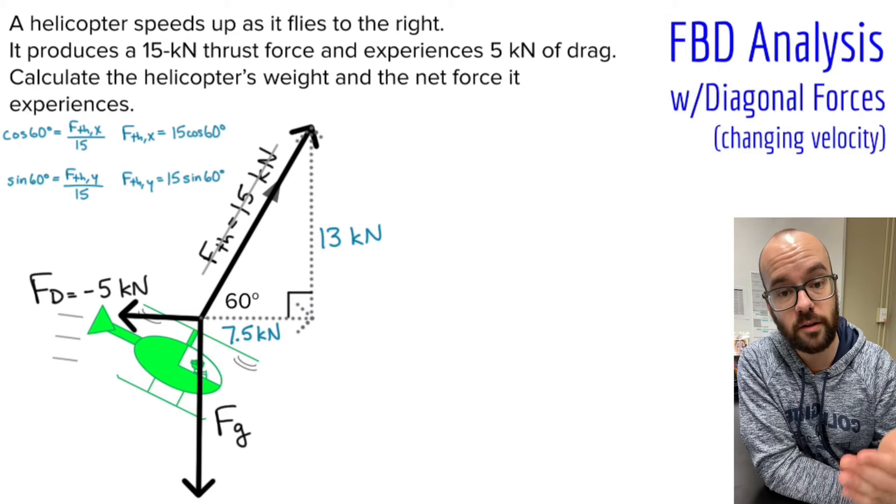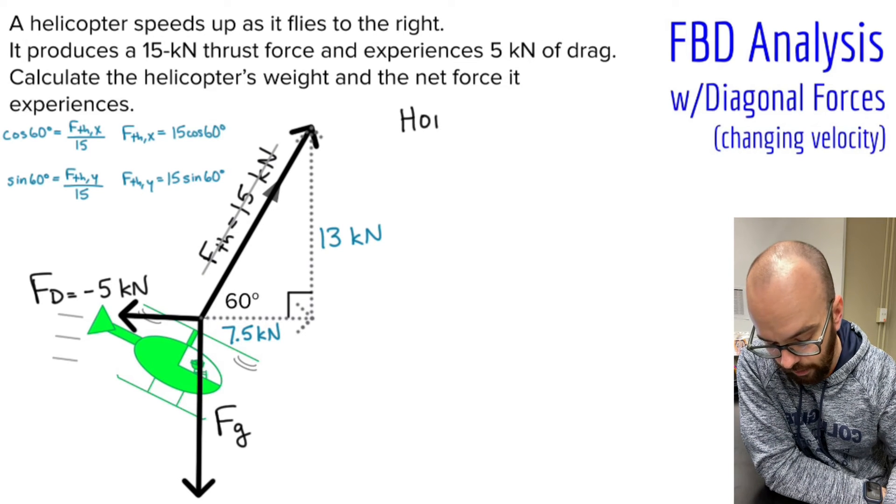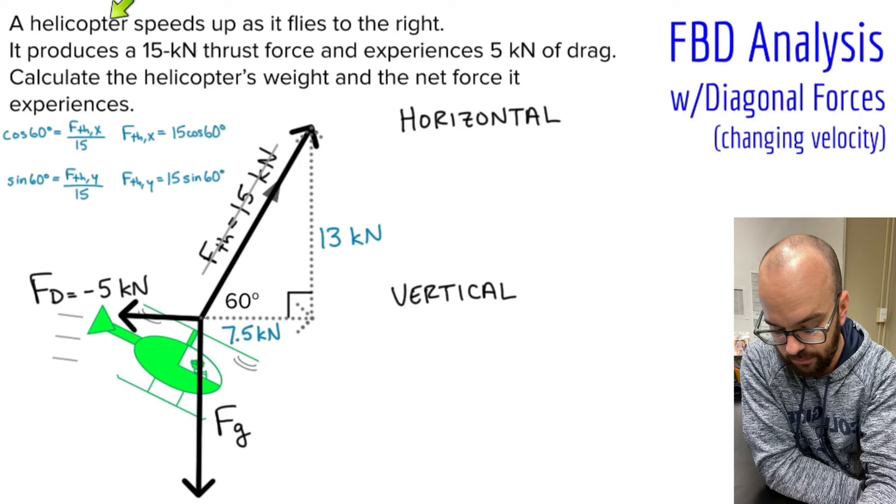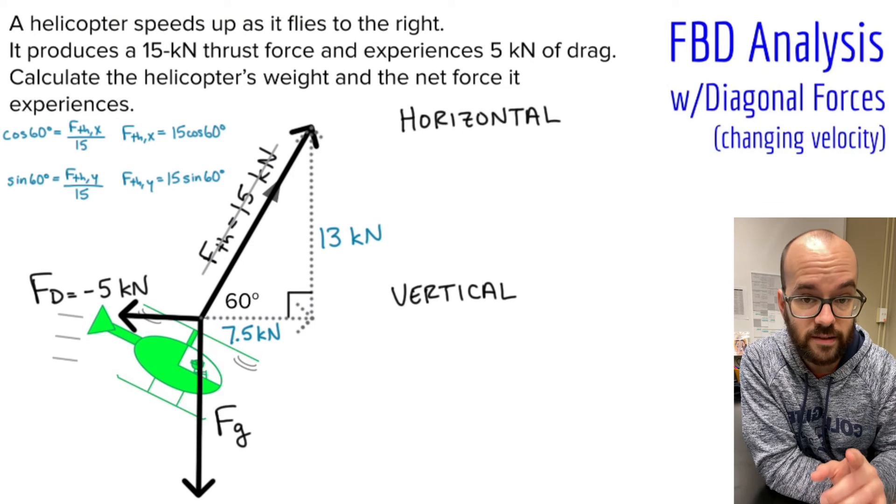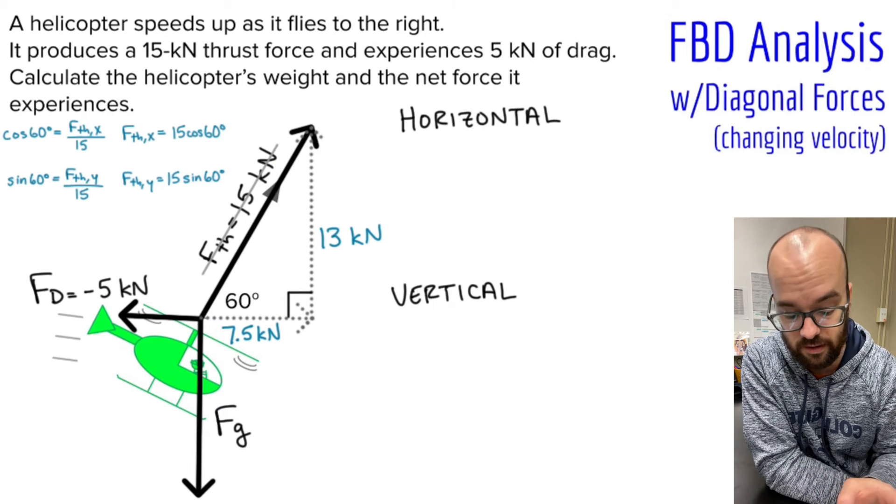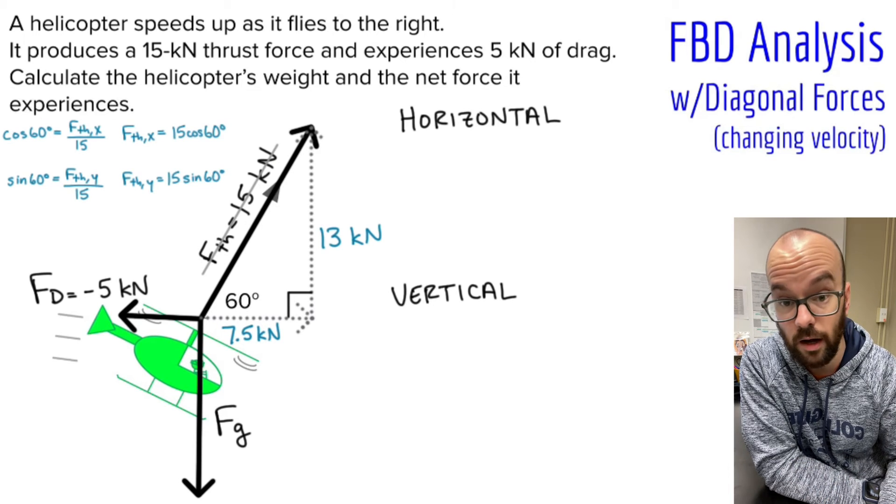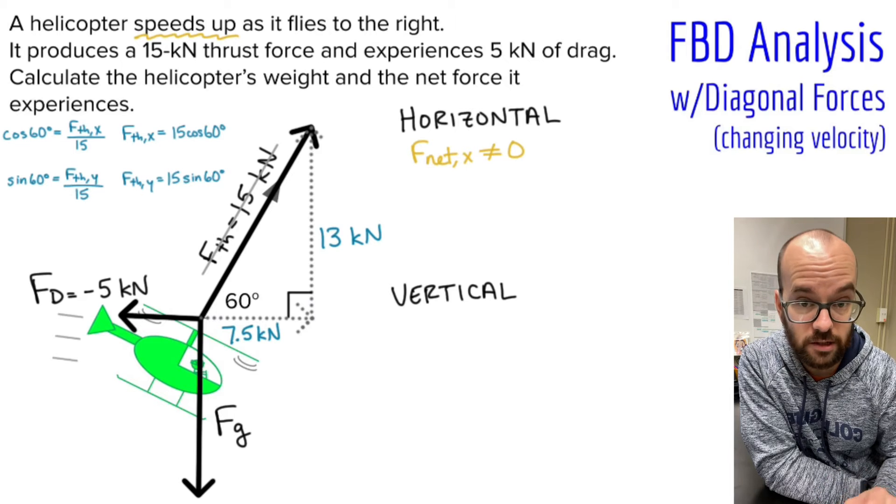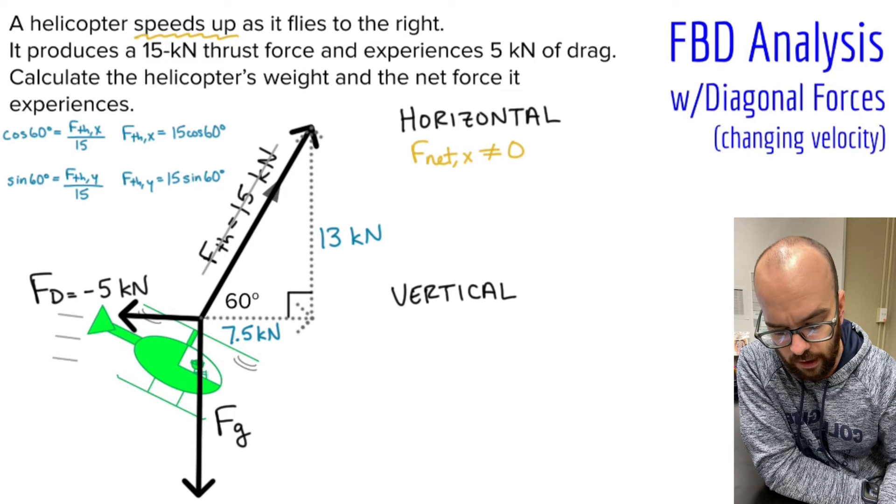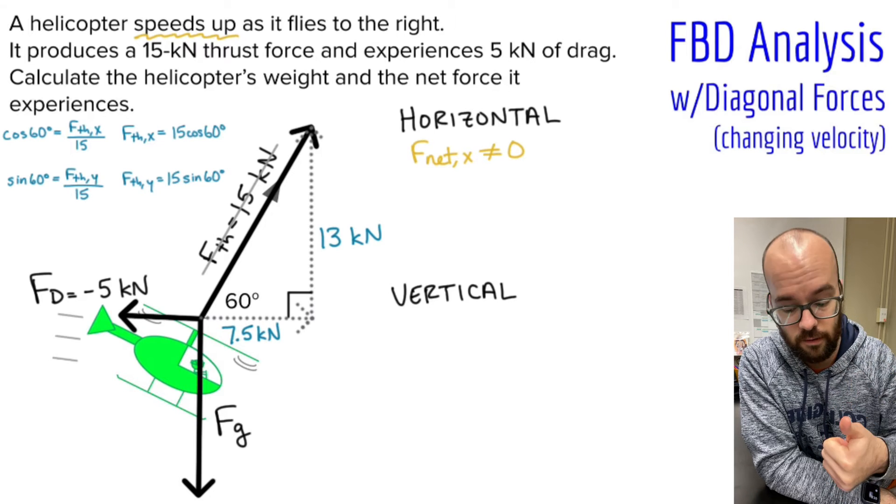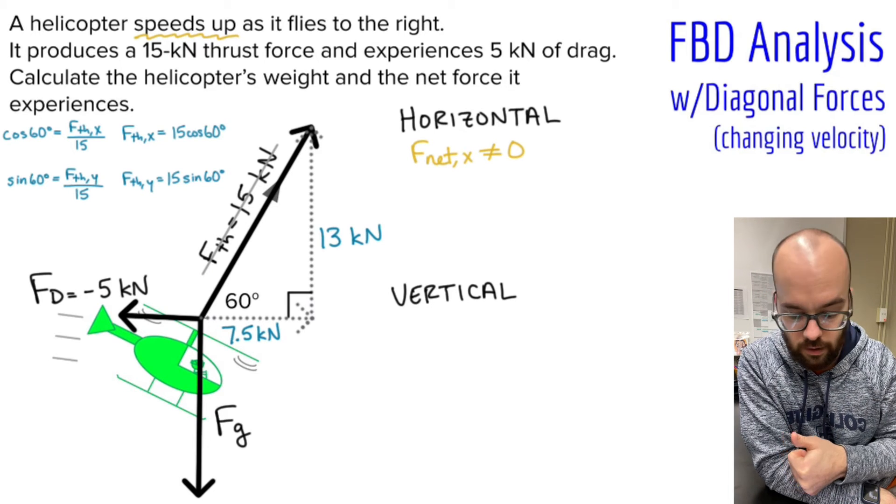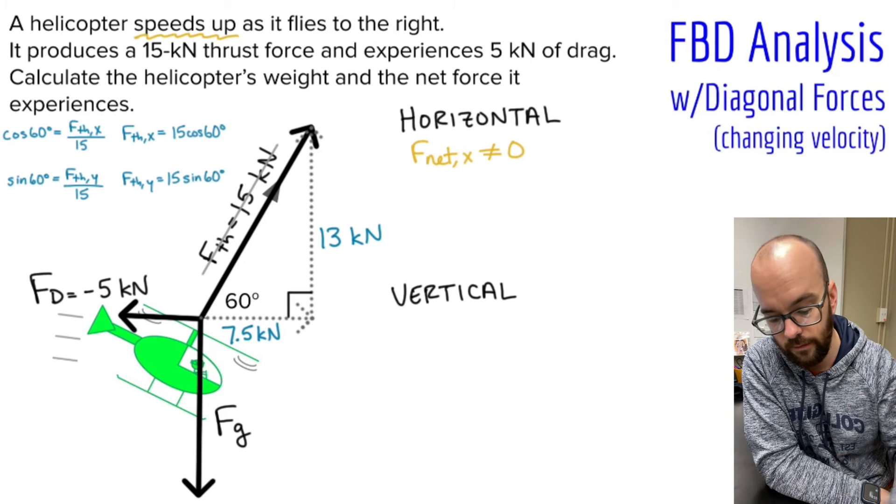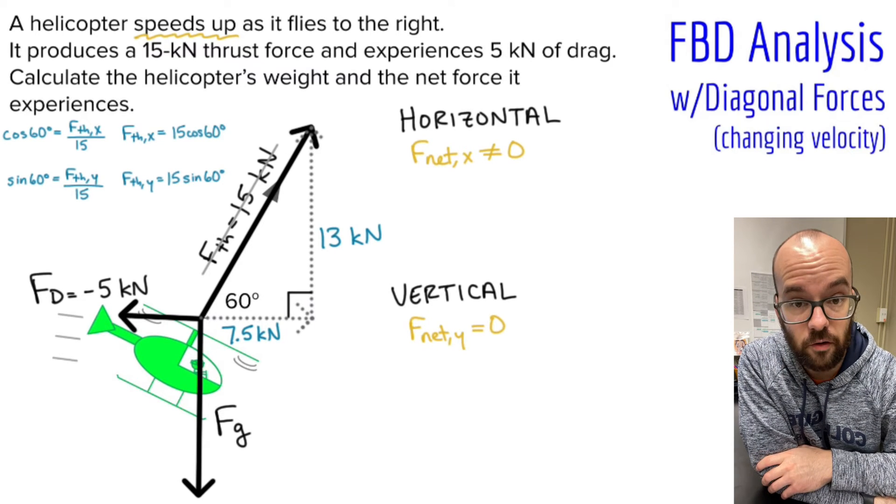Now we want to think about this horizontally and vertically separate from each other. I'm going to label my diagram horizontal and vertical and do the analysis separately. Thinking horizontally, I see that it speeds up as it flies to the right. Since it's speeding up, it's not a constant speed or constant velocity, so the forces horizontally have to be unbalanced. In other words, the net force is not zero horizontally. Vertically, the helicopter's not moving up or down at all, and it's not going to start moving up or down. Because of that, I know that vertically the forces have to be balanced because it's a constant velocity of zero vertically. So my Fnet in the Y or vertical direction is zero.